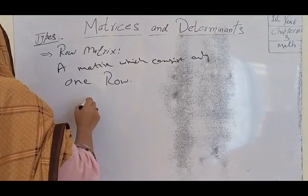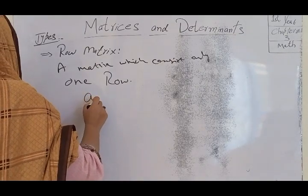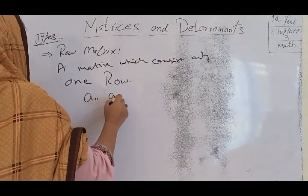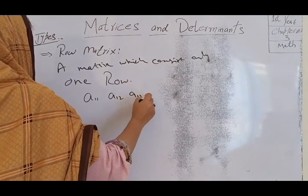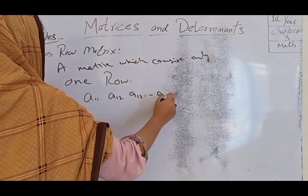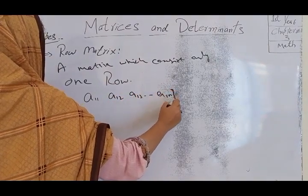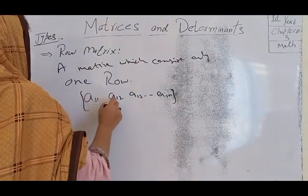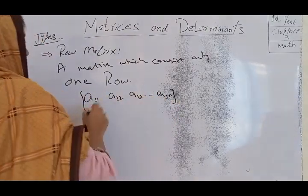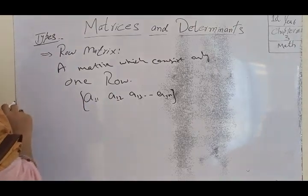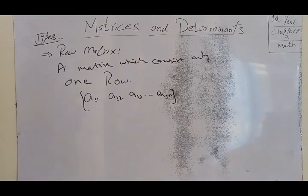A row matrix consists of only one row. For example, A(1,1), A(1,2), A(1,3) — this is a row matrix, also called a row vector.